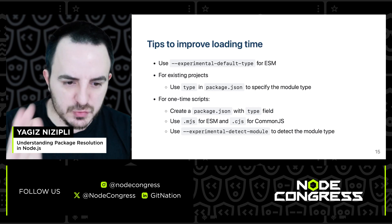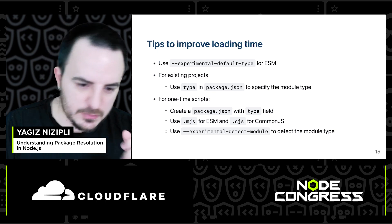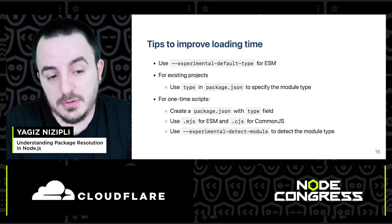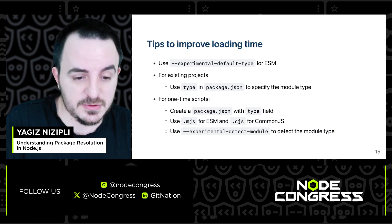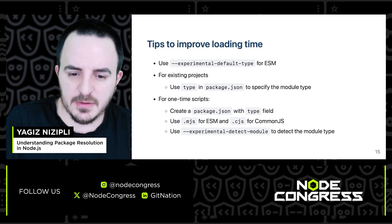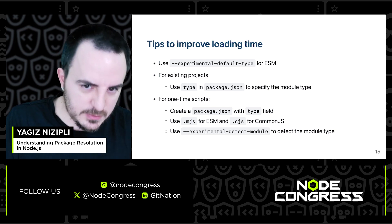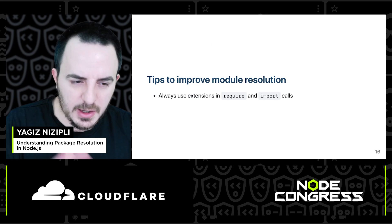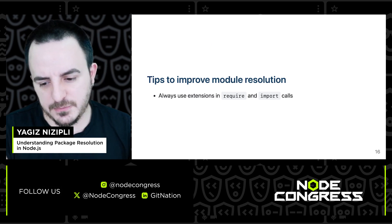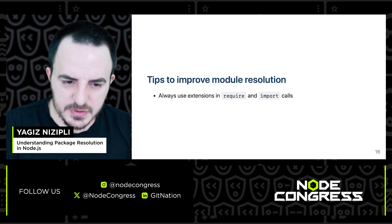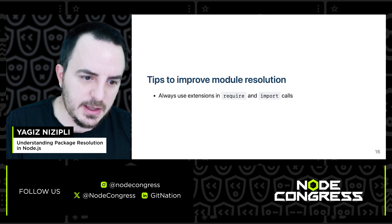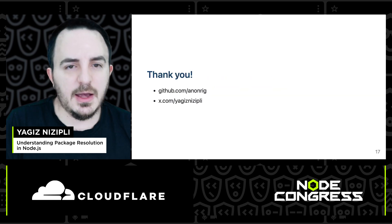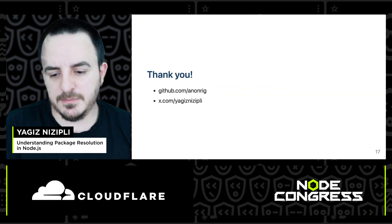You can also use --experimental-detect-module if you just want to write .js files without worrying about extensions or package.json — but be aware it's experimental and has some issues. Additionally, you can use --experimental-default-type for ESM to go straight to the ESM path. To improve module resolution, always use file extensions in require and import calls. In ESM, this is required. In CommonJS, it's not required, but we strongly recommend always using extensions. Thank you for listening, and I hope you learned something today.